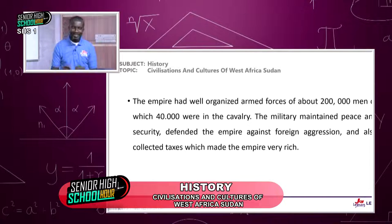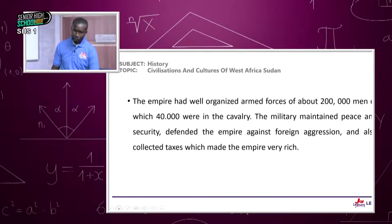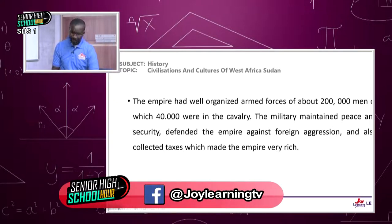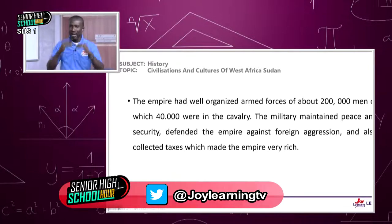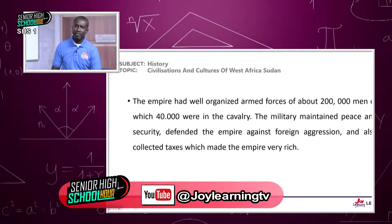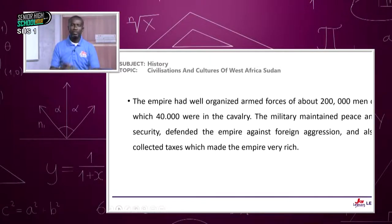The empire had well-organized armed forces of about 200,000 men, of which 40,000 were cavalry — soldiers who ride on the backs of horses. The military maintained peace and security, defended the empire against foreign aggression, and also collected taxes, which made the empire very rich. The empire developed at the back of a well-organized, disciplined army. In our sub-region today there has been some turmoil — Ghana should not fall prey to such turmoil.